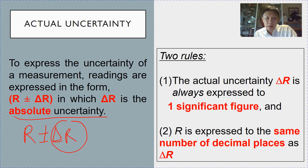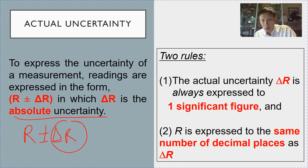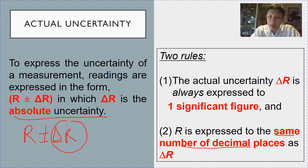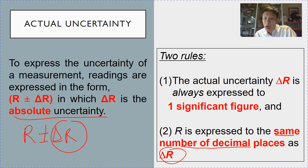There are two rules you must follow when writing uncertainty in this form. The first rule is that the actual uncertainty is always rounded off to one significant figure, because uncertainty is after all an estimation. The second rule is that the reading r will be expressed to the same number of decimal places as the uncertainty, because it makes no sense to express r to more or fewer decimal places than Δr.